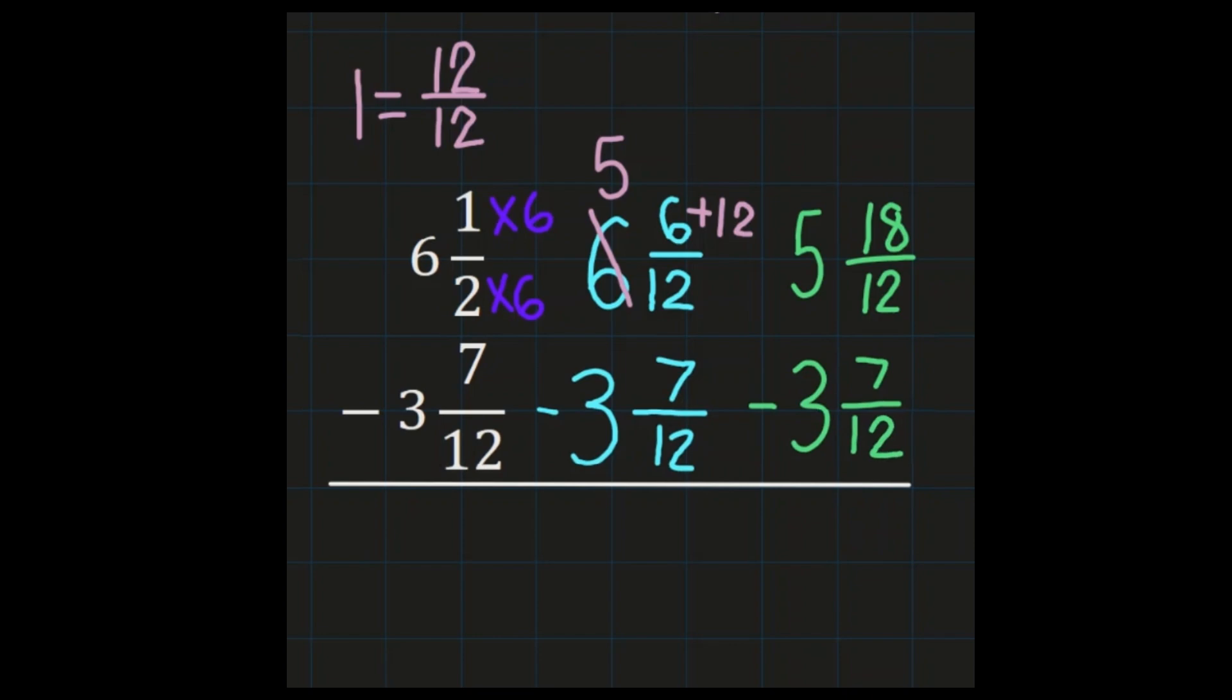So now I have a common denominator so I can subtract my numerators. 18 minus 7 is 11. My denominator of 12 remains the same. And 5 minus 3 is 2. So 6 and a half minus 3 and 7/12 equals 2 and 11/12 because I can't simplify the 11/12. So this is my final answer.